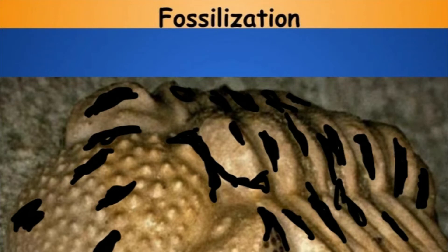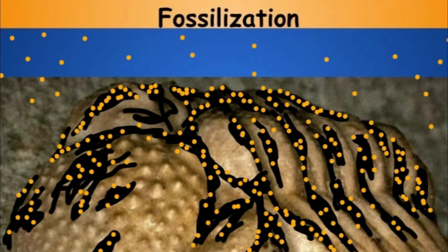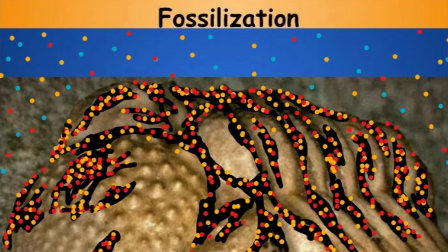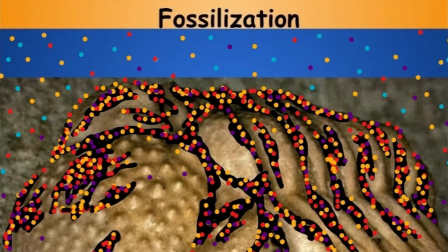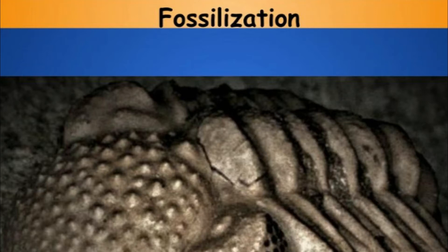A lot of the organic, or carbon-based, materials eventually break down. But isotopes — atoms of different substances dissolved in the water — may settle into the dissolving parts of the fossil. Calcium, silica, and sometimes iron and other dissolved isotopes start to fill in the pores of the dissolved parts of the creature, making a fossil. The end result is a very close, nearly identical copy of the original material, only now in stone instead of organic matter — a stone fossil.